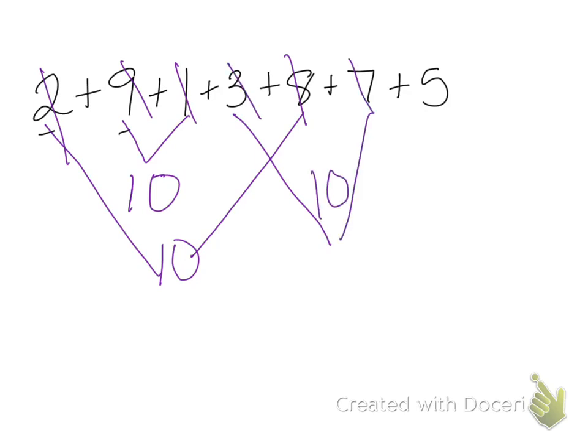So now instead of adding all those numbers together, all I have left is that I've got 10+10+10+5. So I'd have 10, 20, 30, 35. So I have a total of 35 pennies.